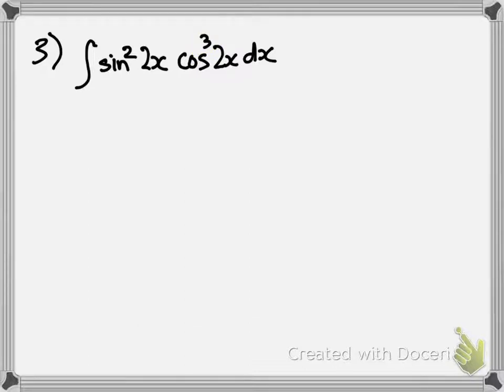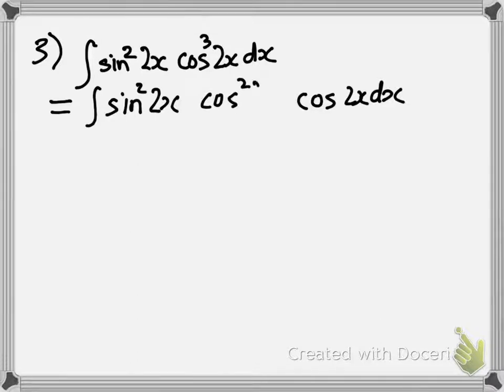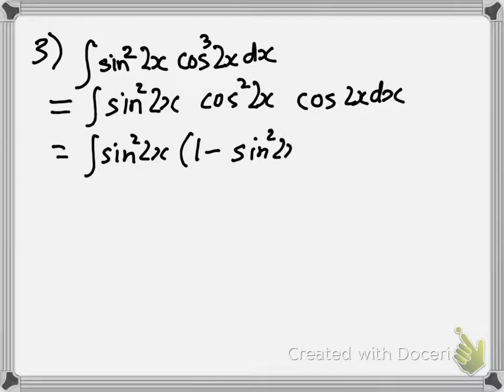So using that we can take out one copy of cosine, not really taking it out but putting it somewhere on the right. And by doing that we are left with two copies of cosine 2x. The remaining two copies will be converted to be a sine. And so if I convert that, it will be 1 minus sine square of 2x.